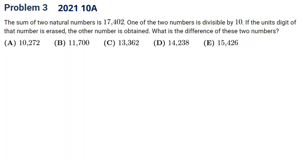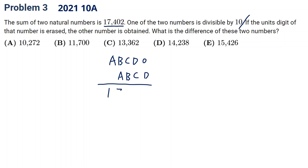The sum of two numbers is 17402. One of the two numbers is divisible by 10. If the unit digit of the number is erased, the other number is obtained. What's the difference? So we can assume the big number is A, B, C, D, and 0. And the unit digit is erased, so it becomes A, B, C, D. And the total is 17402. Then we can just do it step by step.